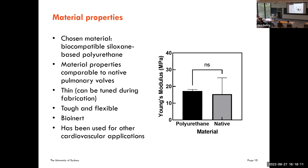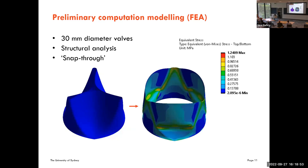The chosen material is a biocompatible and biostable siloxane-based polyurethane. Mechanical testing showed material properties comparable to native pulmonary heart valves. Thickness is tunable during fabrication — thinner or thicker as needed, within limits. It is a tough yet flexible bio-inert material that has also been used for other cardiovascular applications.